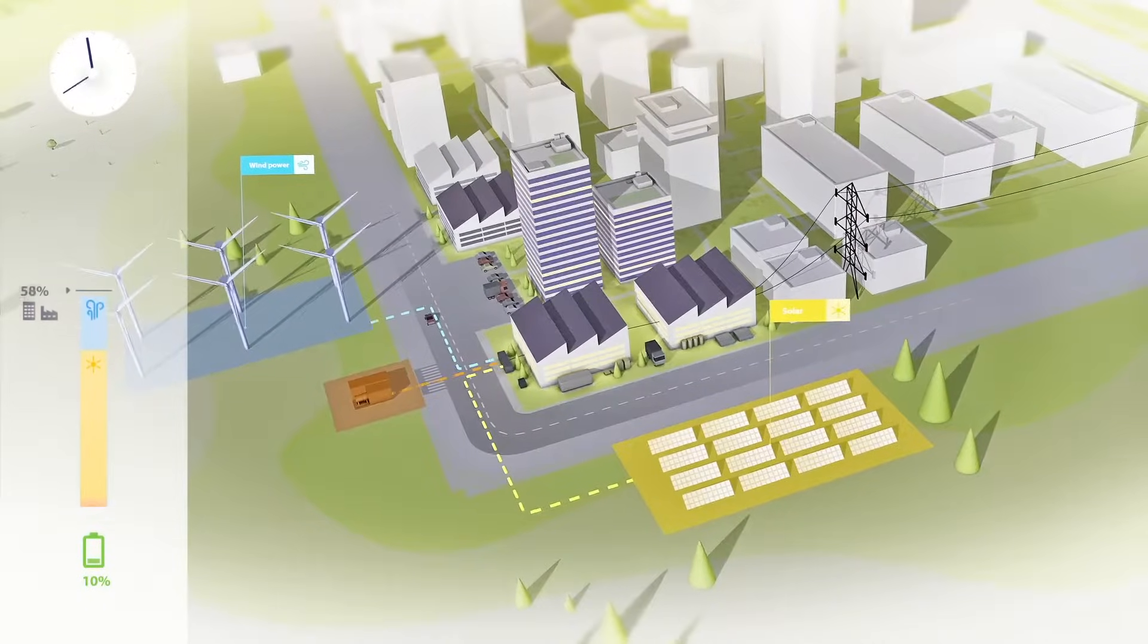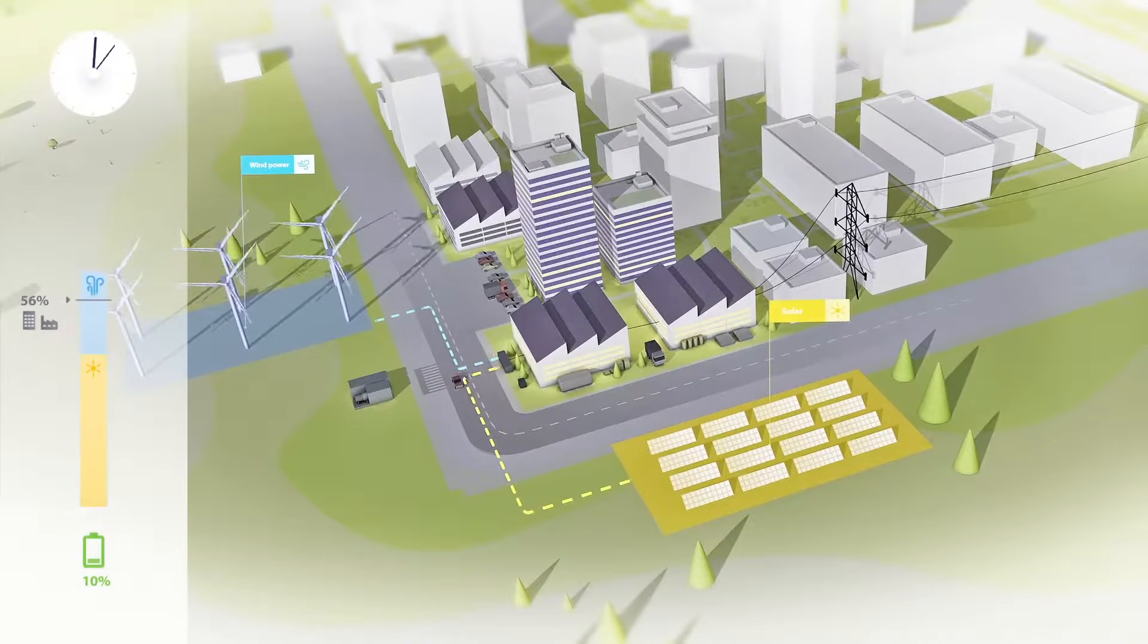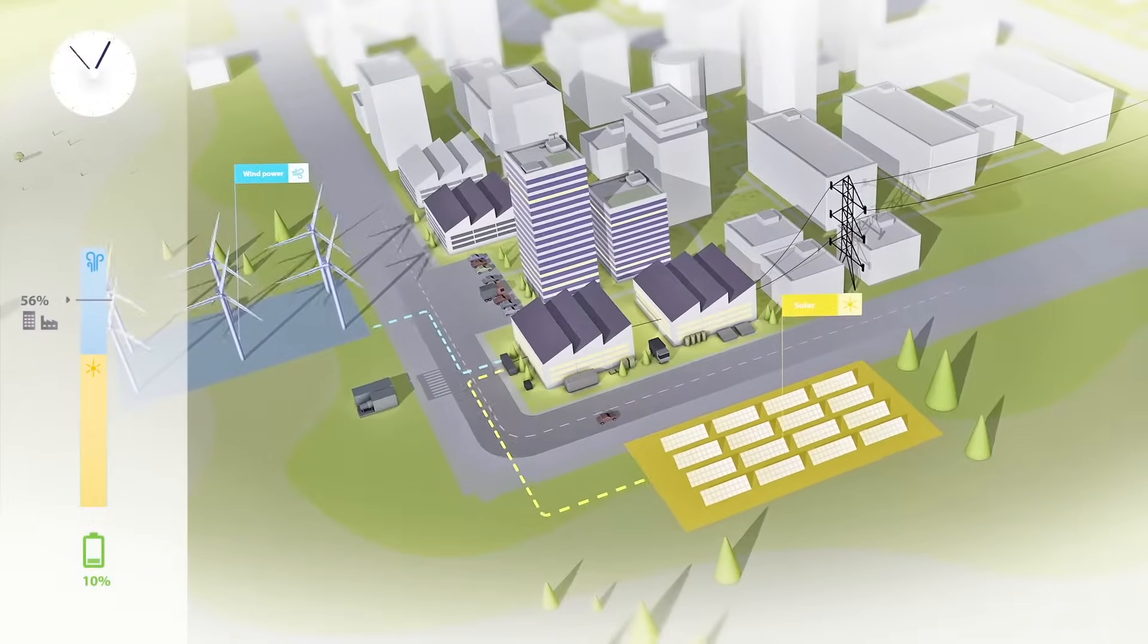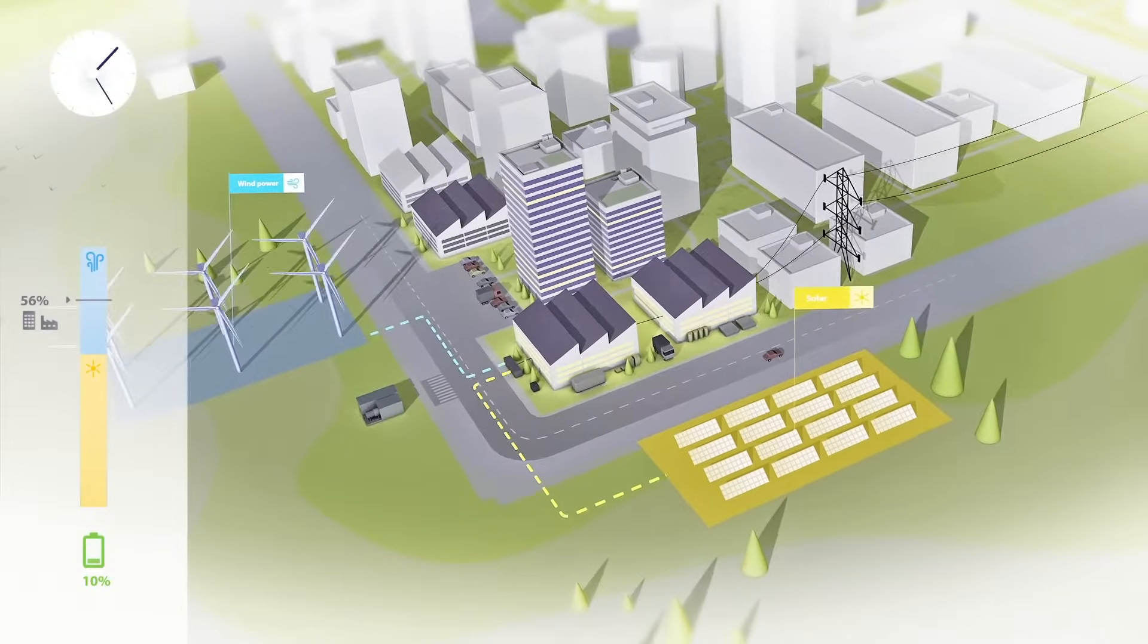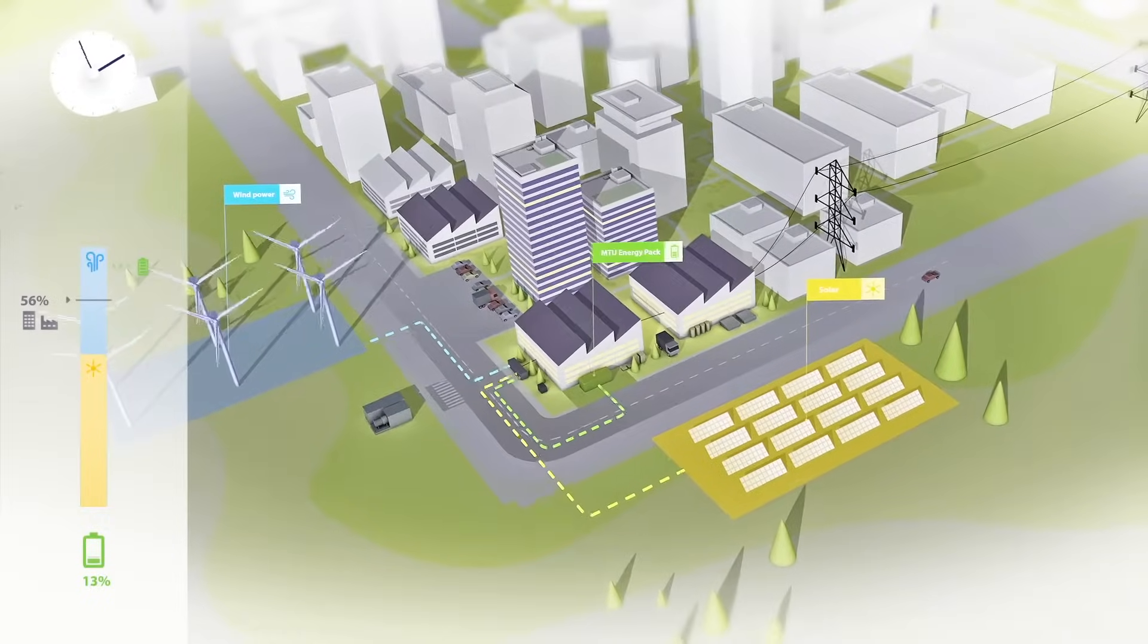During the lunch break, considerably less power is needed while lots of energy is obtained from sun and wind. So the excess wind power can be stored in the battery, which is still discharged.